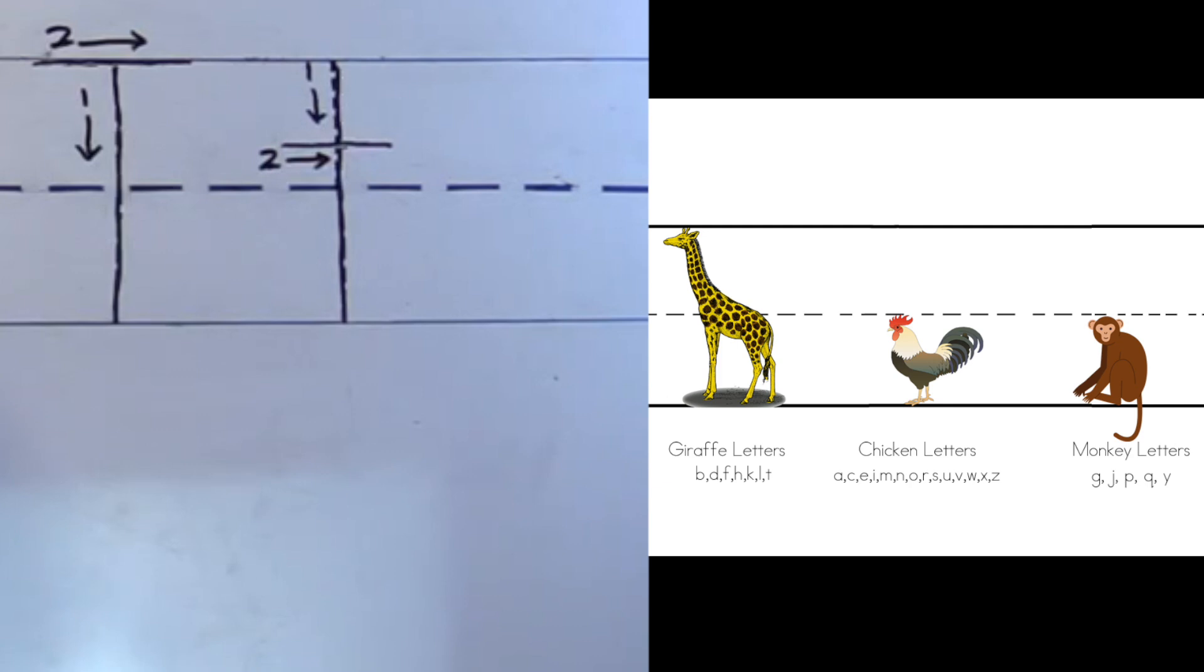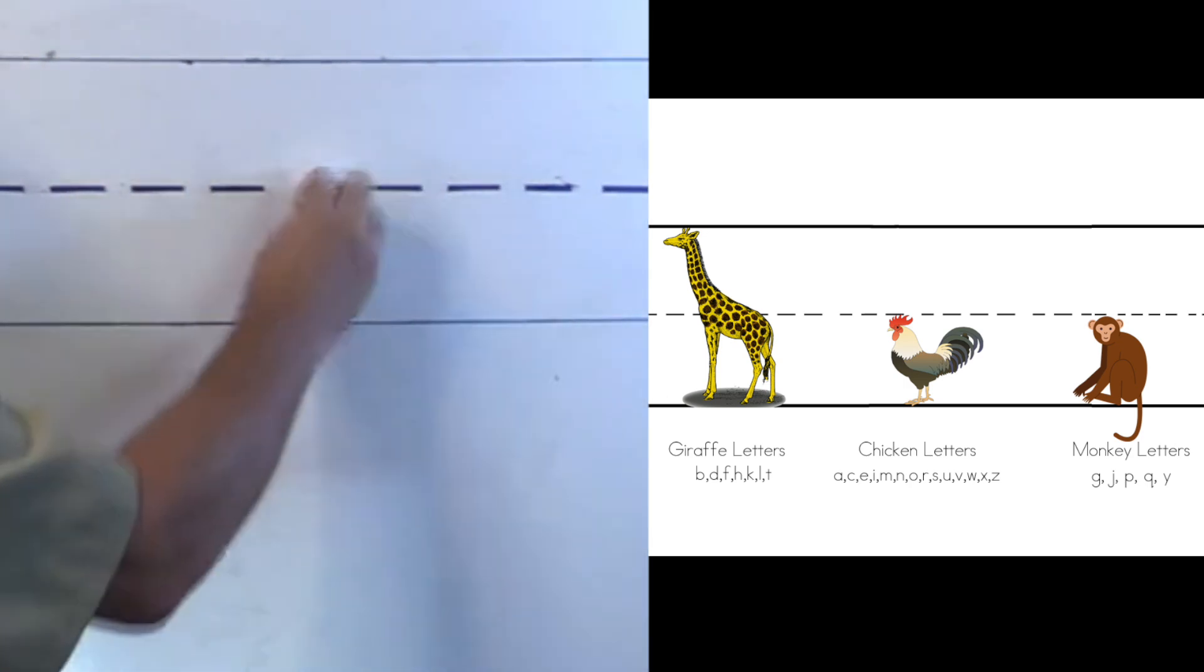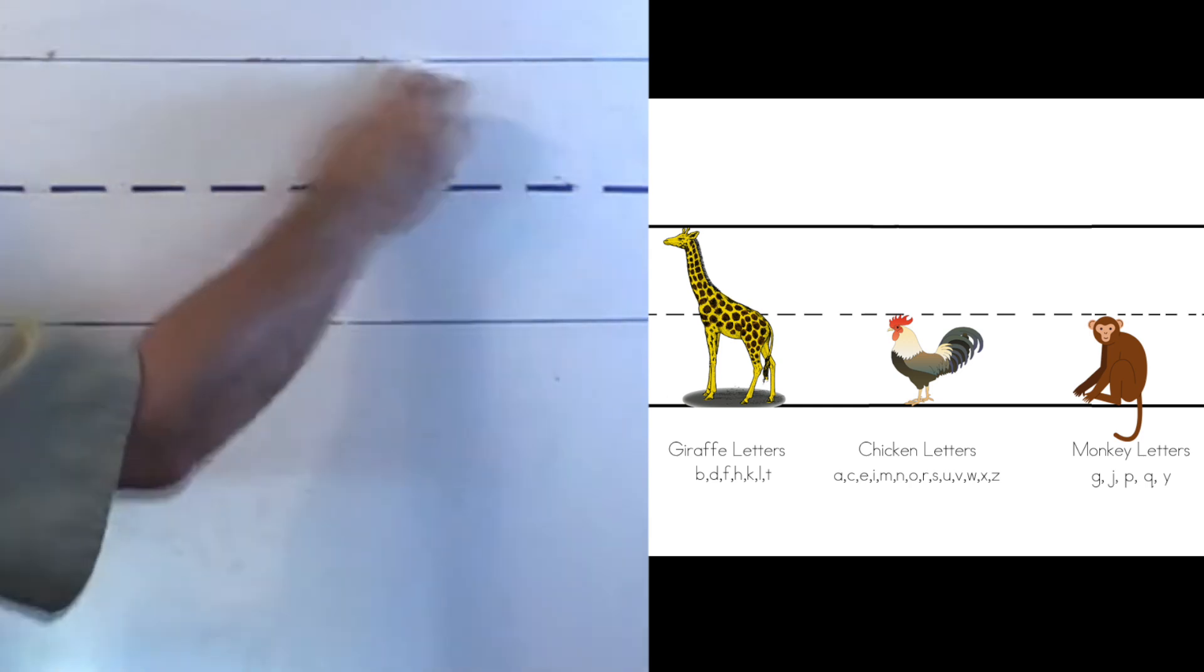And there are our uppercase and lowercase T. We've done it with the dotted lines. Now what do we do? That's right. We have to do it without the dotted lines. Let me erase mine. While I'm doing that, you can get ready to write your letters without the dotted lines.